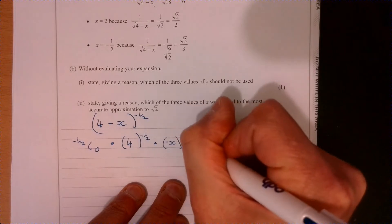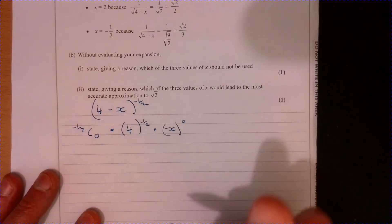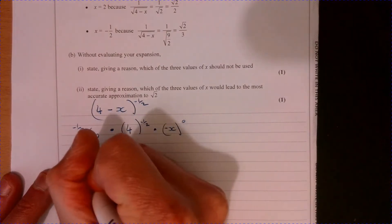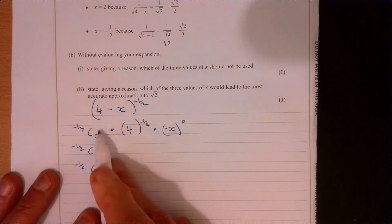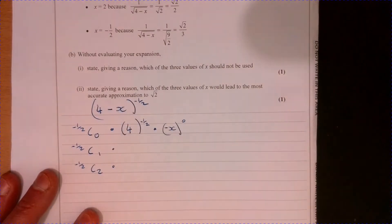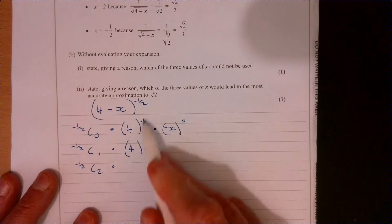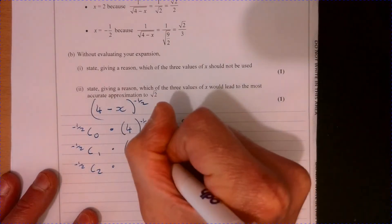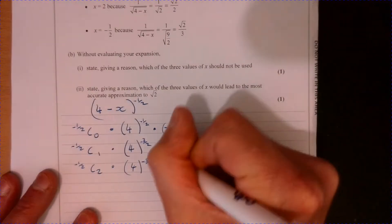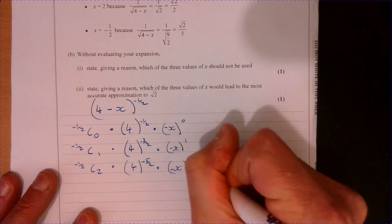I've got minus x to the power of zero. Let's worry about what these are in a minute — just fill the rest in. So the next one's going to be minus a half C one, and then after that it'd be minus a half C two. If you try and put them into your calculator, it won't work, but we'll think about that in a moment. So four — now we drop this by a power of one, so that becomes minus three over two, and then four to the minus five over two. And then let's multiply all of these: minus x to the one, minus x to the two.